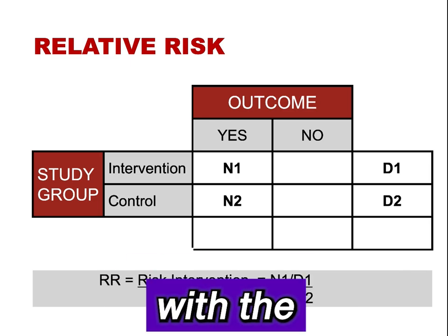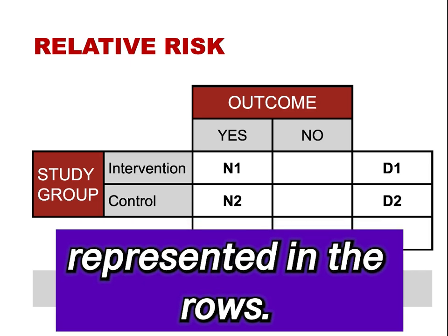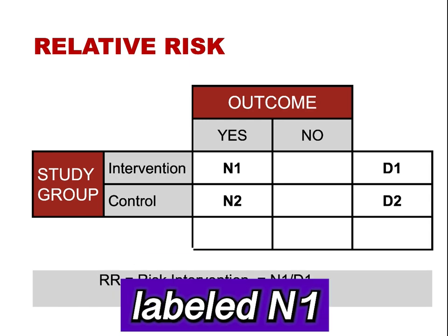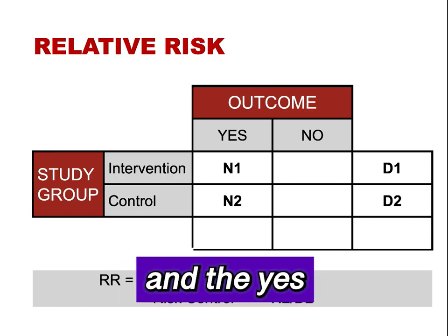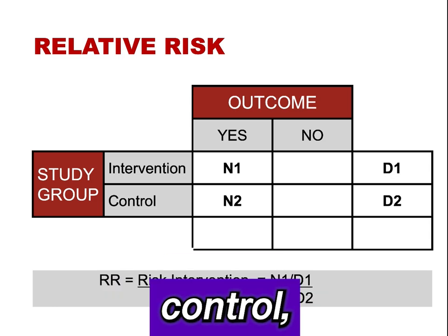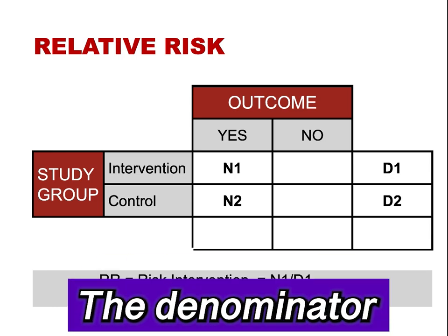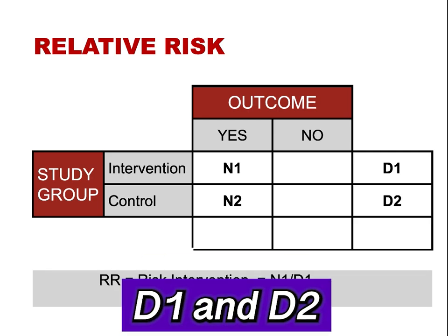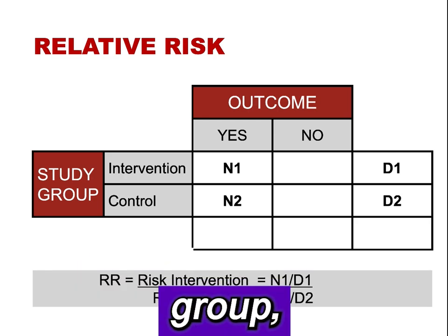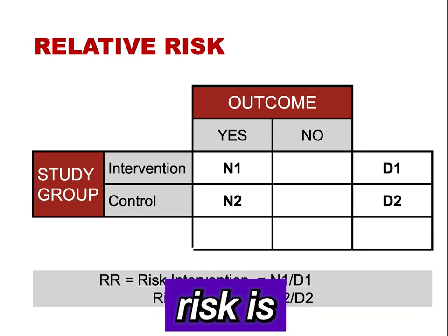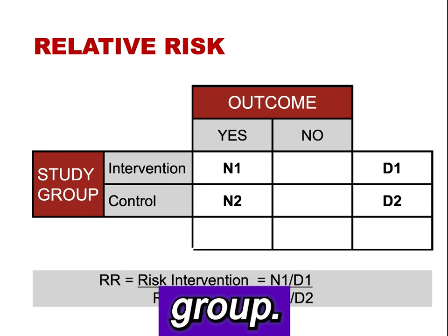This is a 2x2 table with the outcome represented in the columns and the study groups in the rows. For risk, the numerator labeled N1 and N2 is the yes-outcome cell for the intervention and the yes-outcome cell for the control, respectively. The denominator labeled D1 and D2 is the marginal total for the intervention group and the control group, respectively. By convention, the relative risk is the risk in the intervention group divided by the risk in the control group.